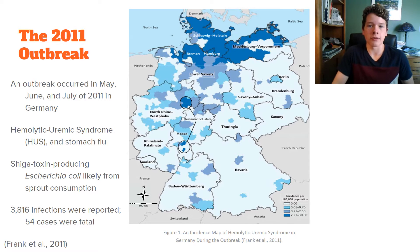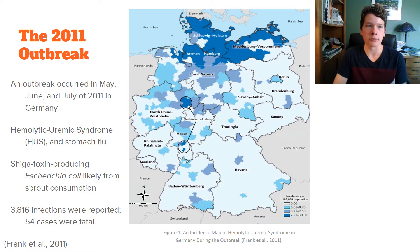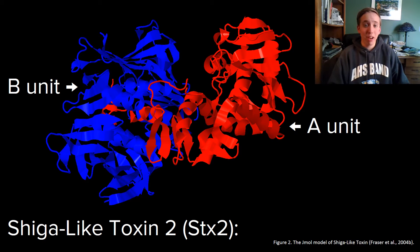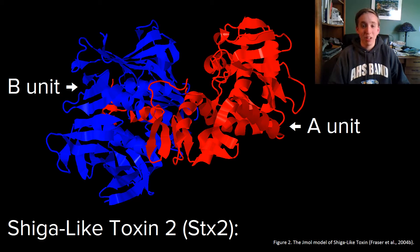Figure 1 on the right depicts an instance map of this outbreak. Shiga-like toxin, specifically variant 2, portrayed here in figure 2, is the main cause of the outbreak in Germany.